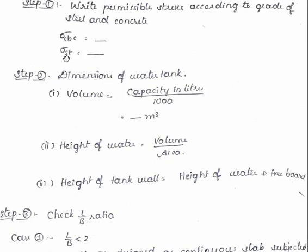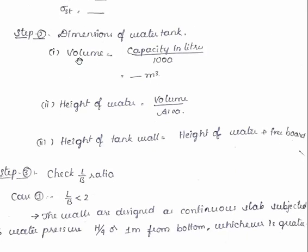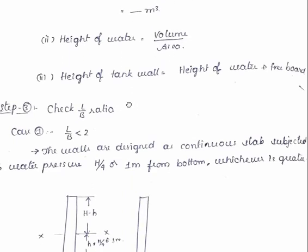Step 2 dimensions of water tank: here volume is capacity in liters divided by 1000. So if we divide the capacity of water tank in liters by 1000 we will get the volume of water tank in meter cube. Second one is height of the water tank, so easily we can find it as volume by area. We will get the height in meters.